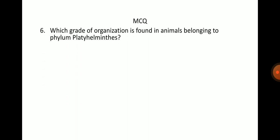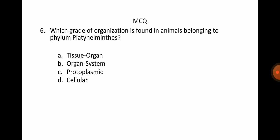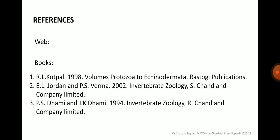Which grade of organization is found in animals belonging to phylum Platyhelminthes? Option a) tissue-organ, b) organ system, c) protoplasmic, d) cellular. Answer: a, tissue-organ grade of body organization. With this, I will stop my lecture on body organization. Here are some references which you can refer to for further information. Thank you.